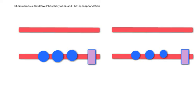We're going to have a look now at similarities and differences between oxidative phosphorylation and photophosphorylation. They both exist in organelles and also in bacteria, but the organelles we consider them in are obviously mitochondria and chloroplasts. Both of these consist of two membranes.